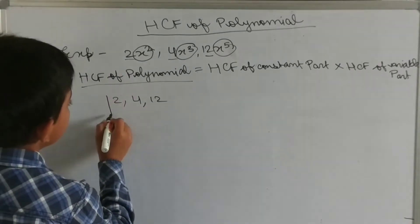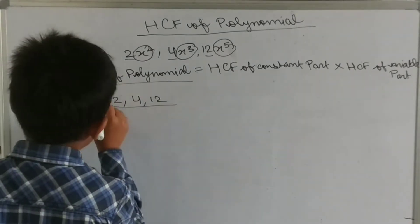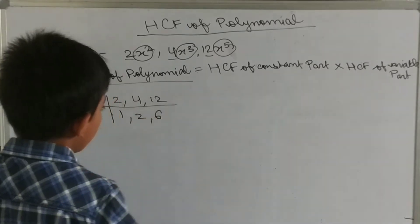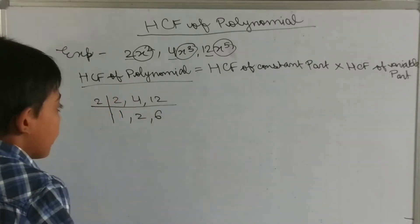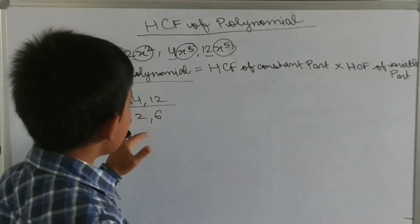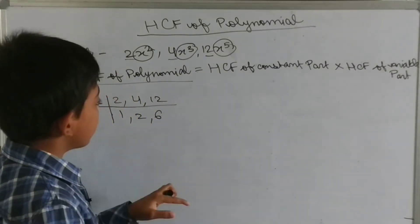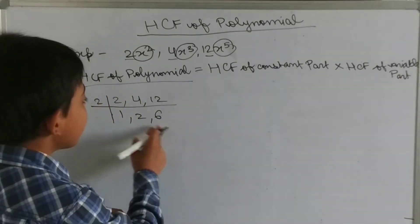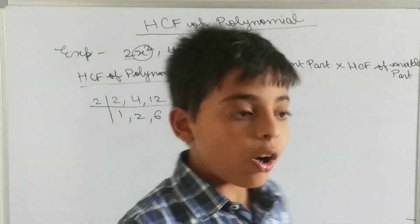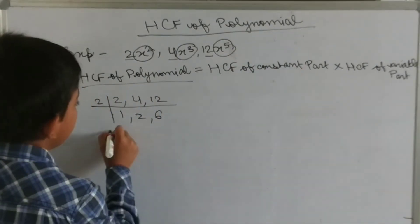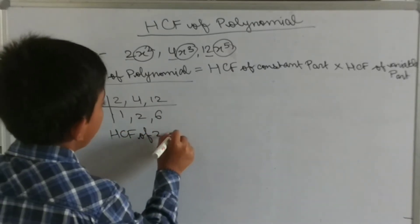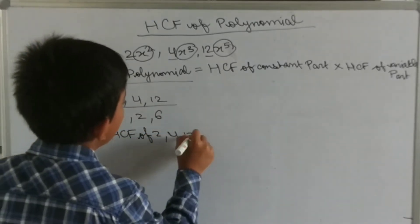Now here 2 is common: 2 goes into 2 once, 2 goes into 4 twice, and 2 goes into 12 six times. So the HCF of the constant part — HCF of 2, 4, and 12 — is 2.